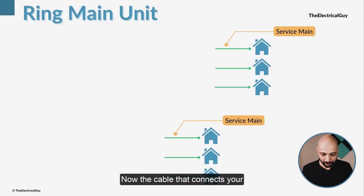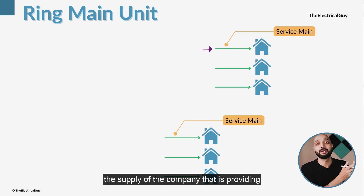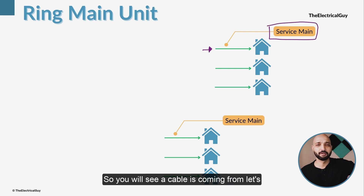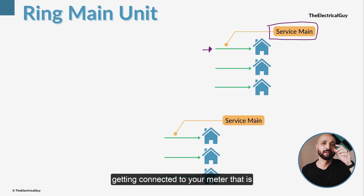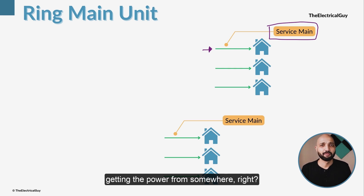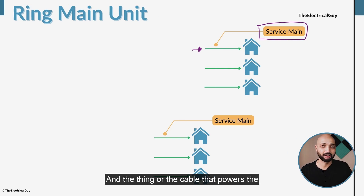The first term is the service main. The cable that connects your house to the distribution supply of the company providing you power is called the service main. You will see a cable coming from, say, a distribution pole to your house and connecting to your meter — that is the service main.